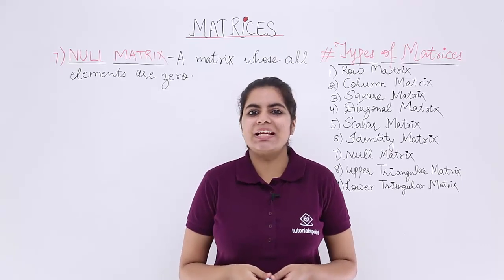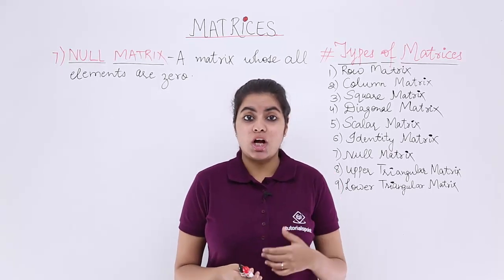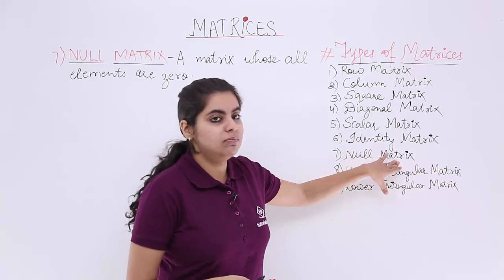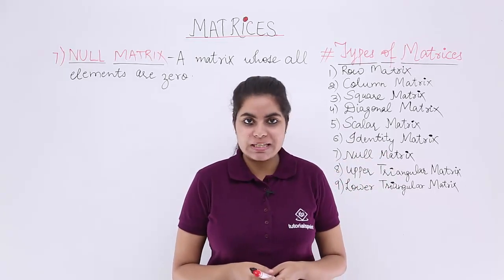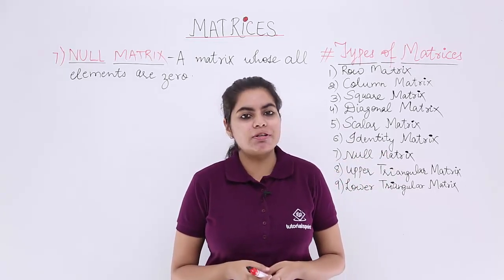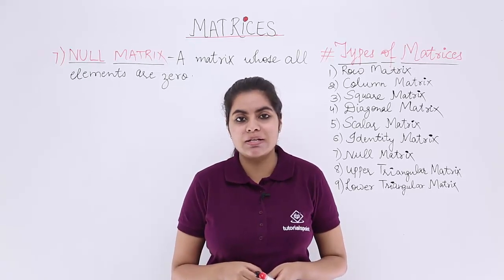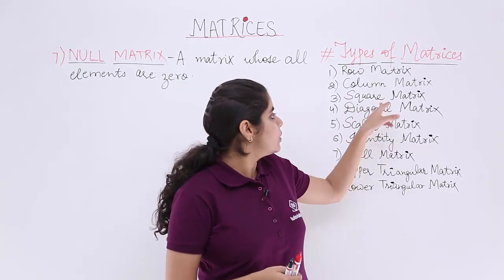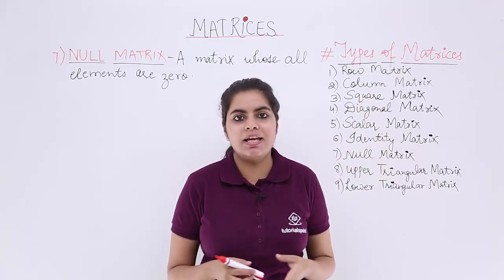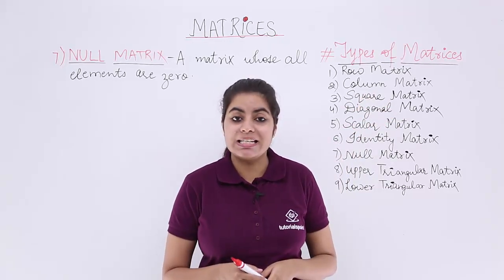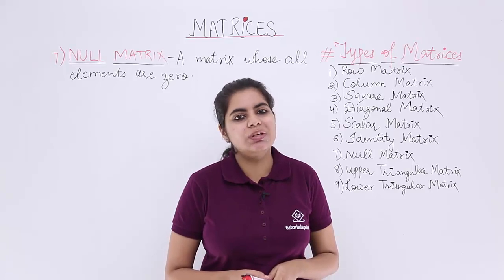In this video let's see another type of matrix called the null matrix. In the previous videos we have already seen few important types of matrices like row matrix, column matrix, and also in succession: square, diagonal, scalar matrix, and identity matrix. This video is dedicated to null matrix.